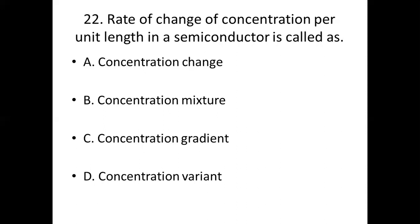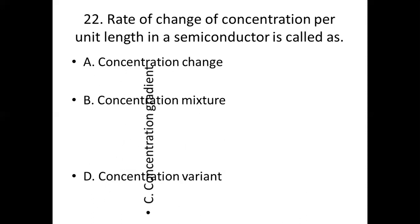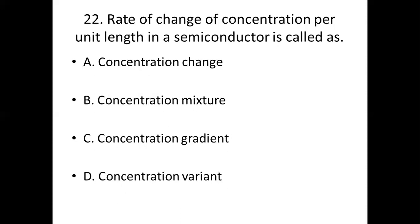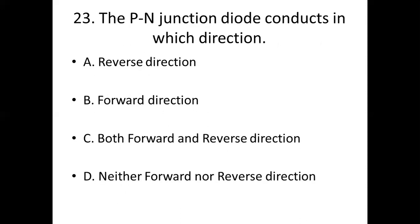22nd bit. Rate of change of concentration per unit length in a semiconductor is called as dash. Option A: concentration change. Option B: concentration mixture. Option C: concentration gradient. Option D: concentration. Answer: Option C, concentration gradient.